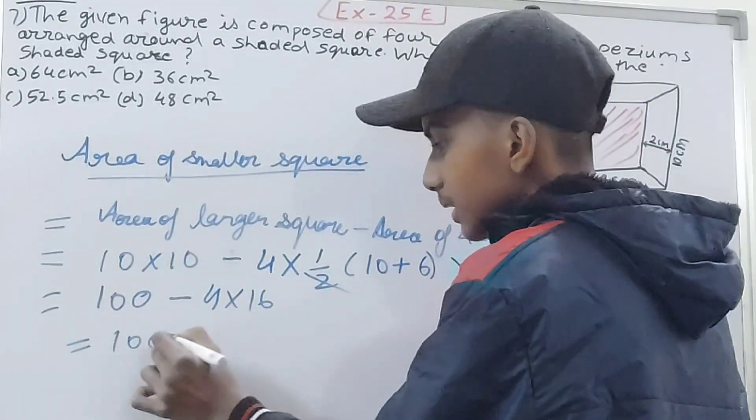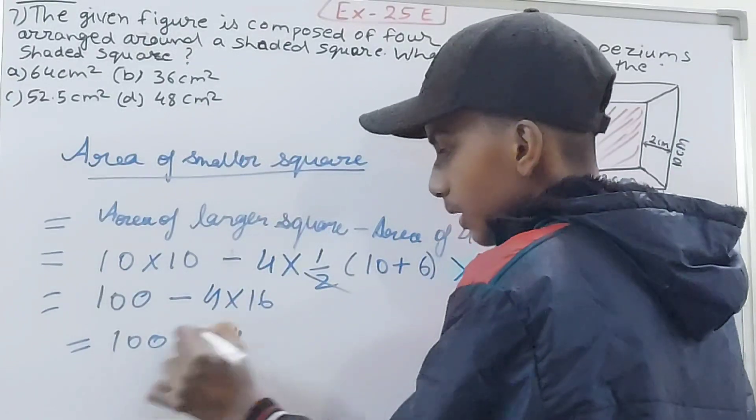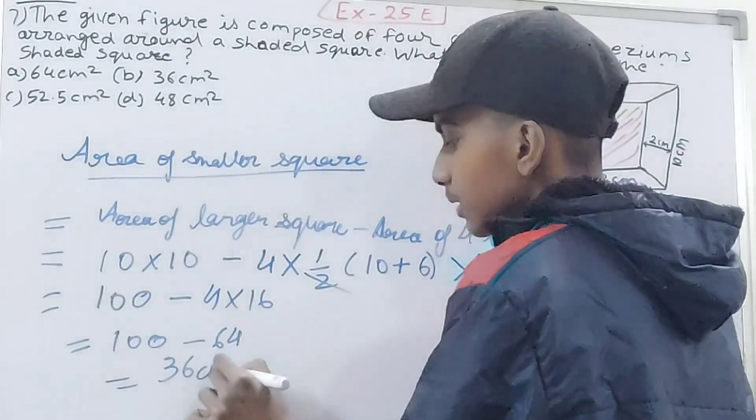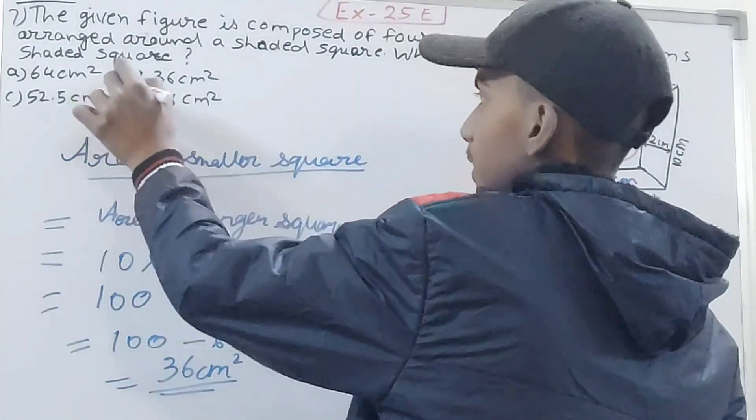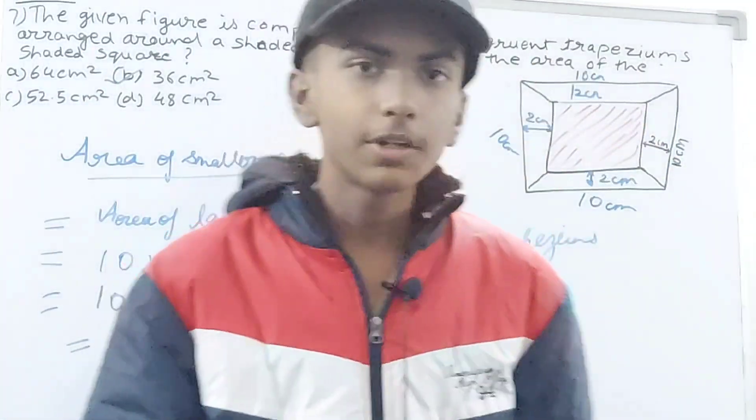100 minus 64 that is coming 36 square centimeters and that's the answer, option B.